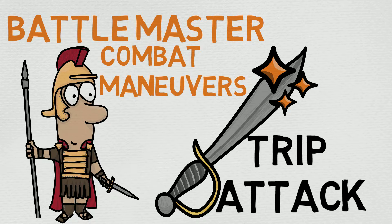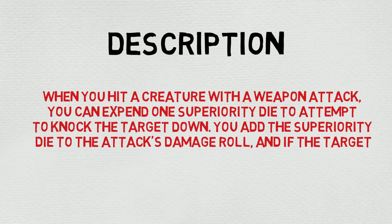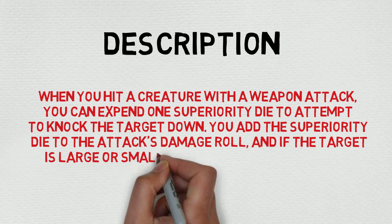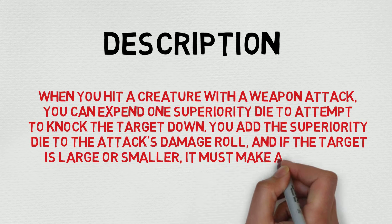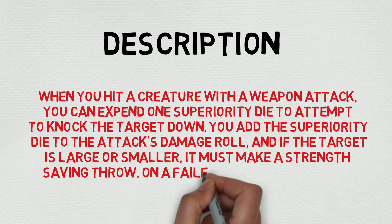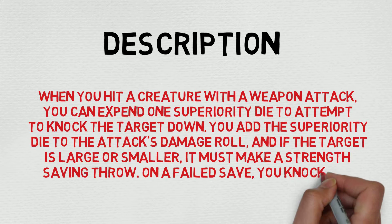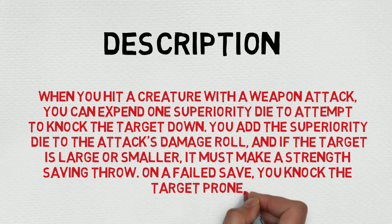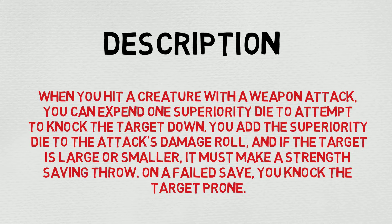The description reads as follows: when you hit a creature with a weapon attack, you can expend one superiority die to attempt to knock the target down. You add the superiority die to the attack's damage roll, and if the target is Large or smaller, it must make a Strength saving throw. On a failed save, you knock the target prone.